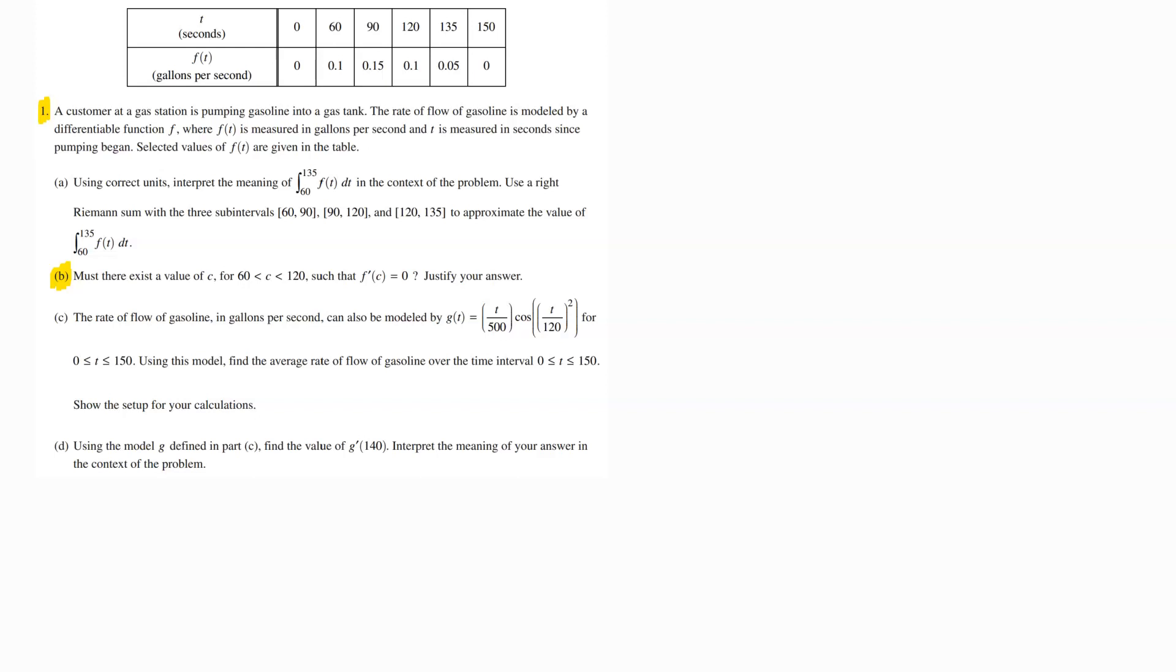I cover Parts A, B, C, and D all in their own individual videos, so if you want to see those solutions, please check out my other videos. Looking at B right now, B is saying must there exist a value of C in between 60 and 120 such that the derivative value at that point equals zero?